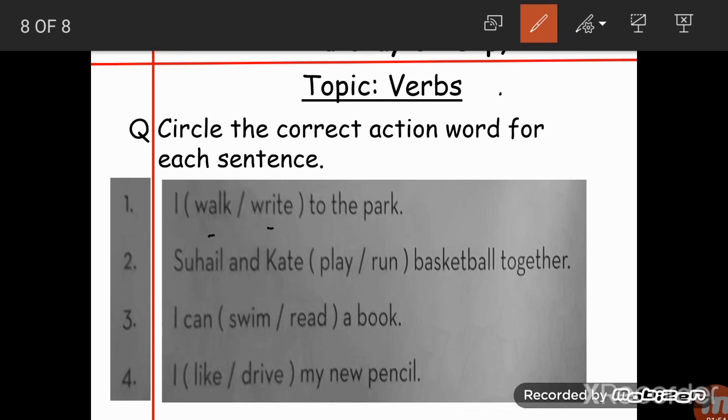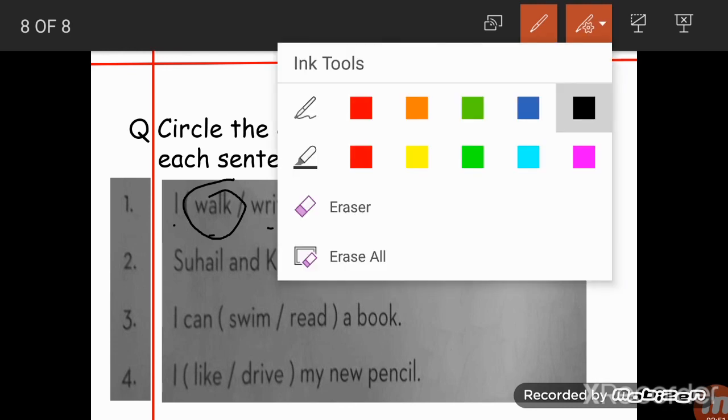So let me help you with this. Let's read the sentences, understand them and then you tell me the correct answer. First one is: I walk slash write to the park. Now there are two words here: I walk to the park and I write to the park. Can you write to the park? This sentence doesn't make sense, so obviously I walk to the park is correct. Let me do the first one for you so that it would be easy for you to do the other three.